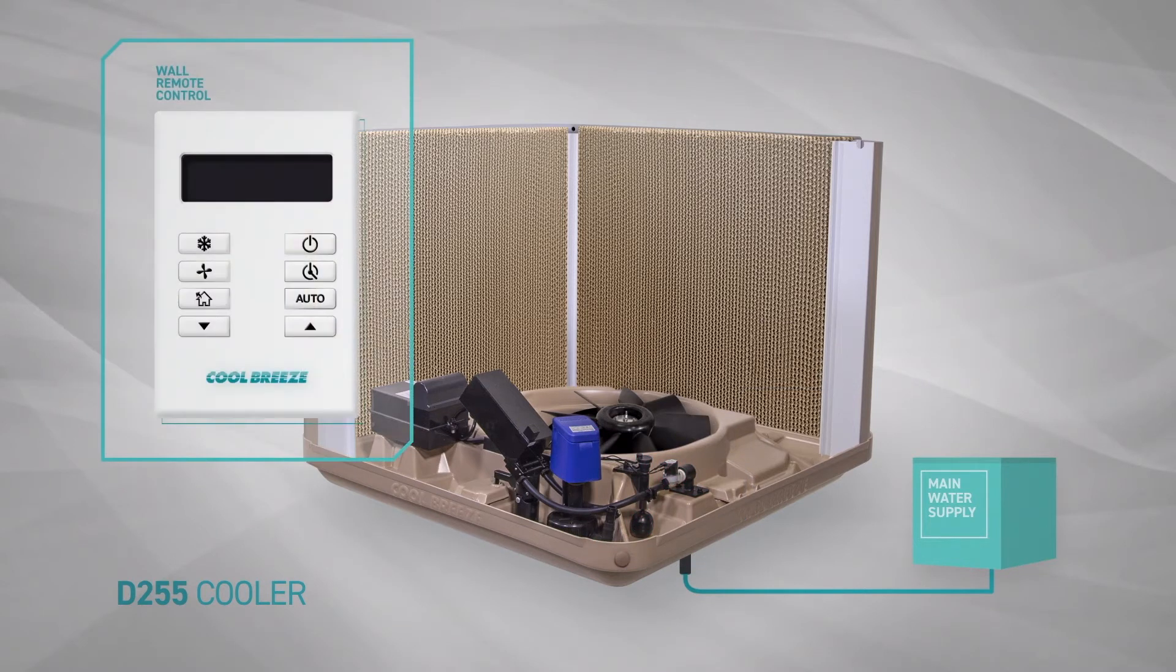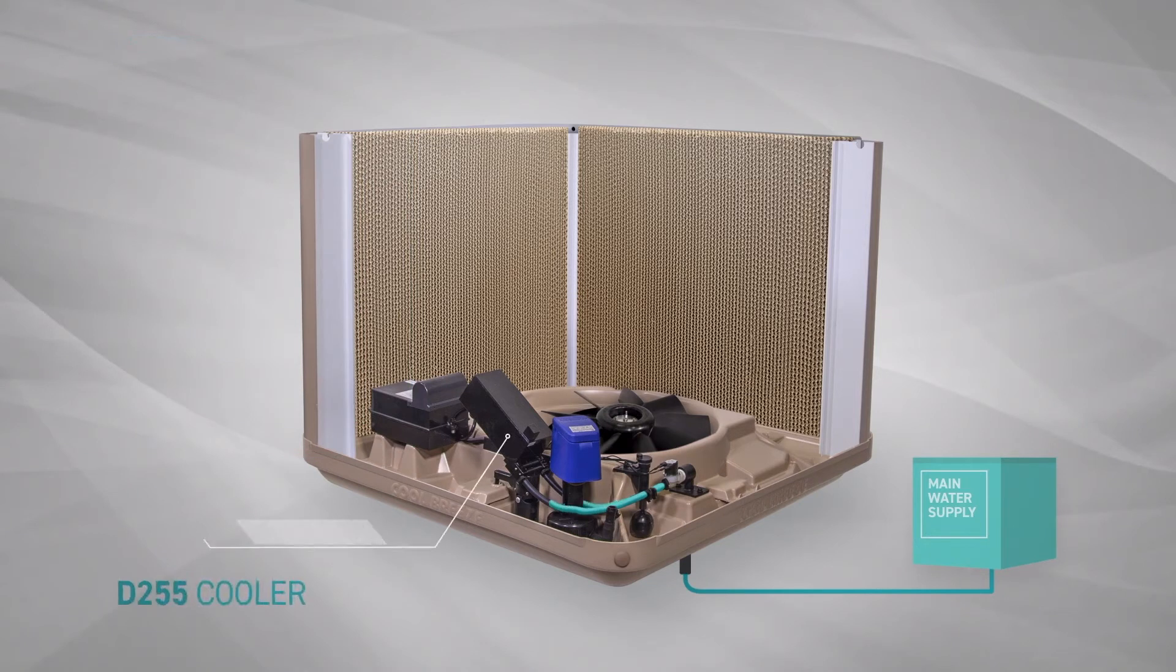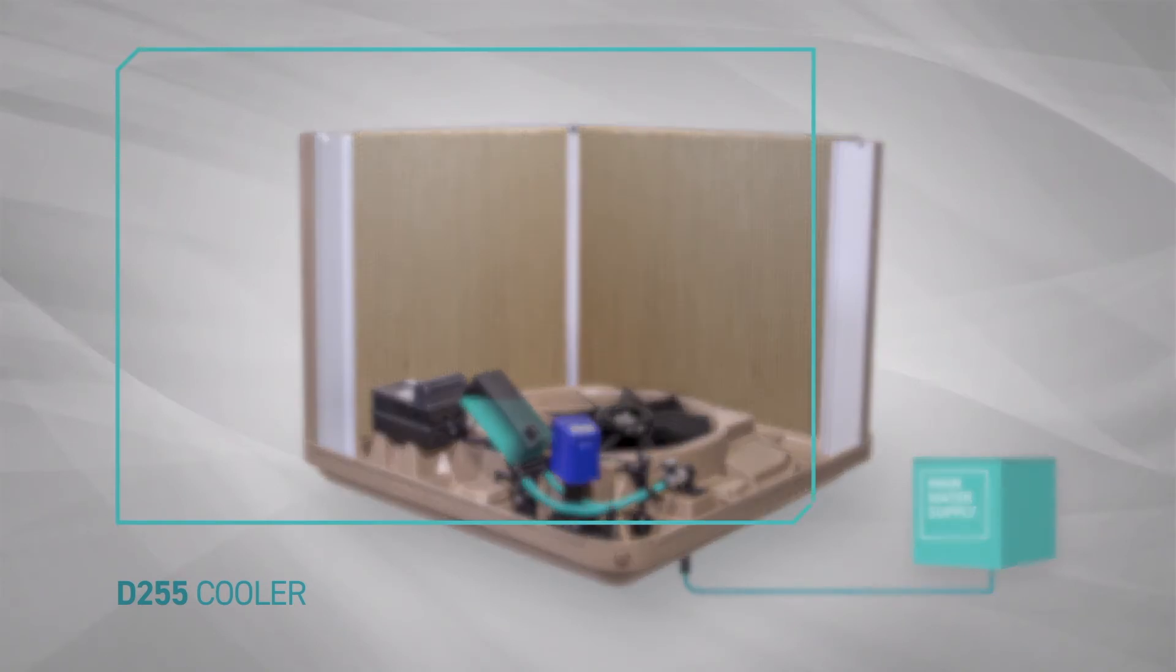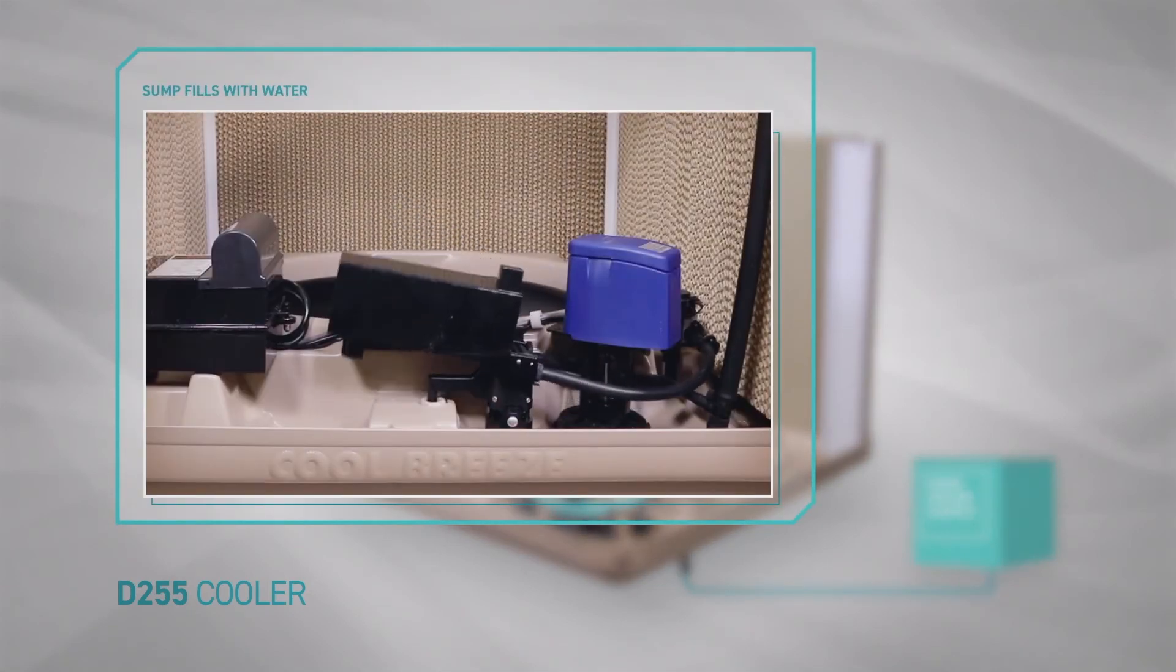When the wall control is pressed it sends a signal to the water solenoid to open and let water flow into the sump via the drain valve. As the water flows into the drain valve assembly the valve will slowly close as the water container gets heavier, at the same time allowing the water sump to fill with water.